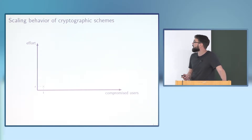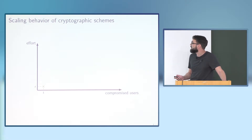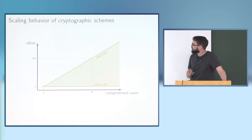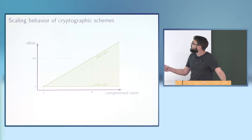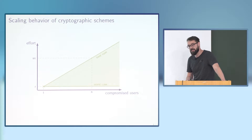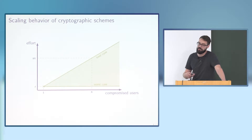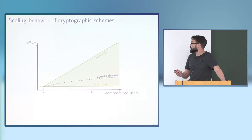We are interested in the relation between the hardness of breaking n instances of the scheme compared to breaking a single instance. On the x-axis we have the number of compromised users and on the y-axis the computational effort—the running time. Attacking one instance takes time t. In the best case, the only way to attack several instances is to rerun the full single-instance attack, so the behavior scales linearly. However, it could be worse: an attack on one instance might give information enabling you to break more instances efficiently.